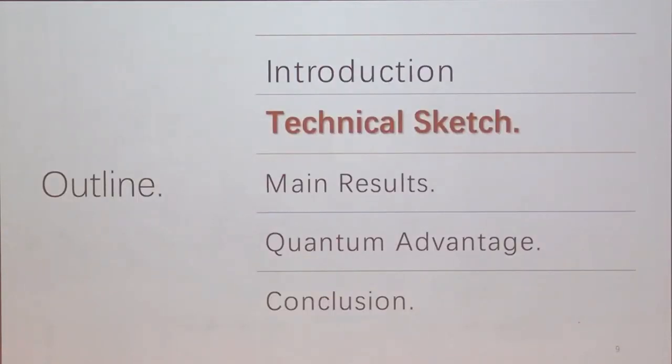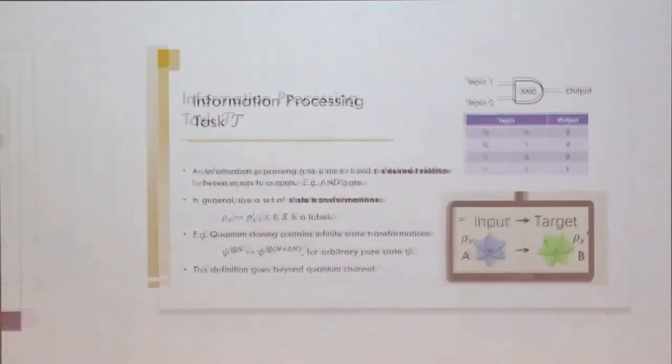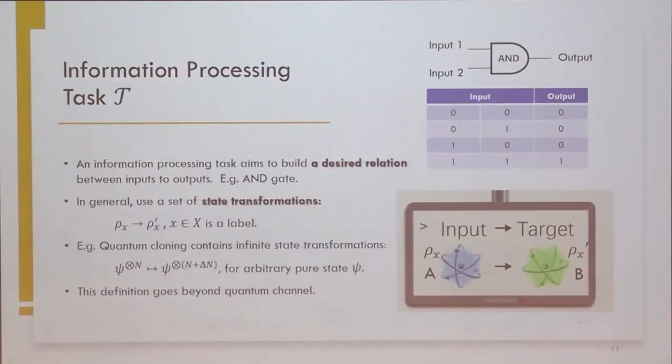Then, let's see the technical sketch of our work on how we derive the optimal trade-off between non-equilibrium cost and accuracy. So our goal is to find the non-equilibrium cost to accurate information processing. For this, we have to address three questions. First, how to model the information task? And then, how to evaluate accuracy of a realistic machine. And finally, how to quantify the non-equilibrium cost of the machine.